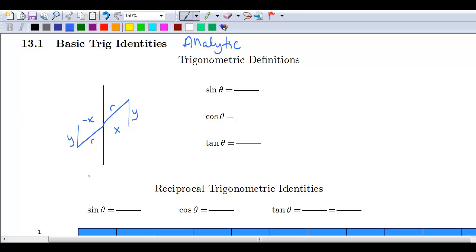Remember that sine is opposite over hypotenuse, so y over r, which in our case is one, so we just end up with y. Cosine is x over r, which again if r is one just gets you to x. Finally, tangent is going to be y over x.